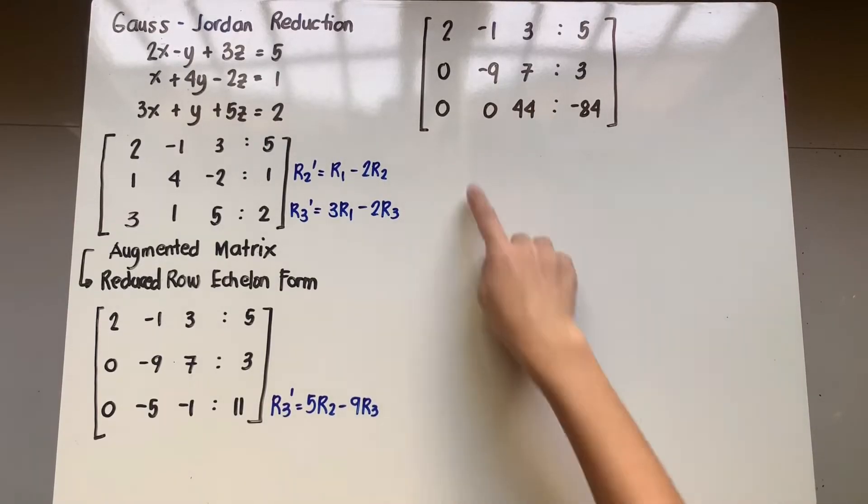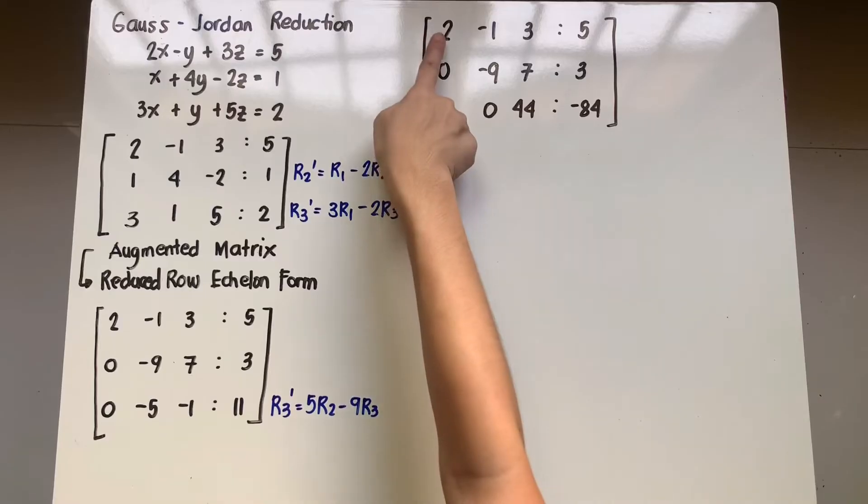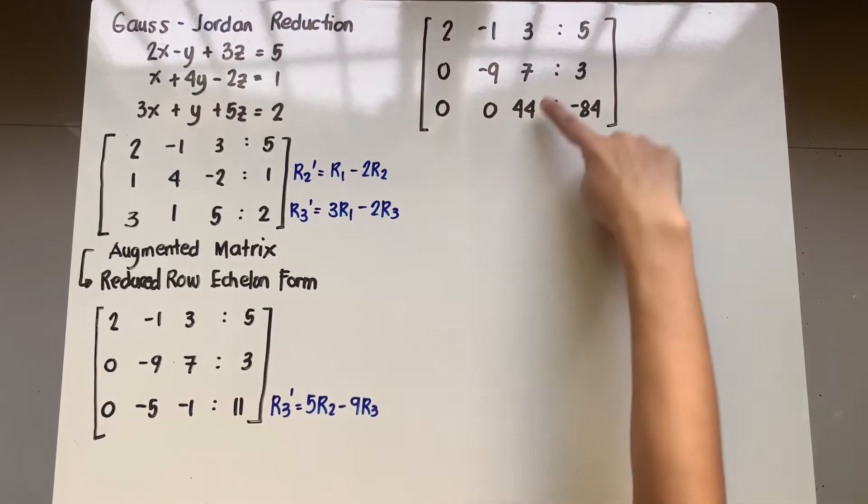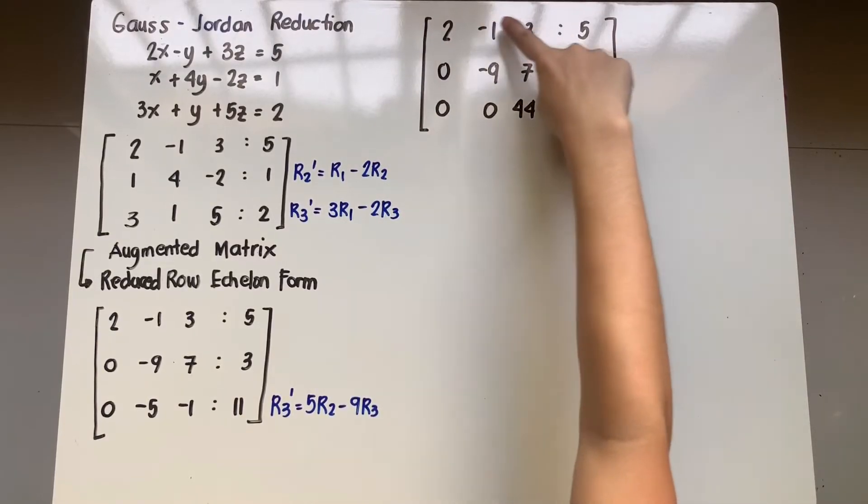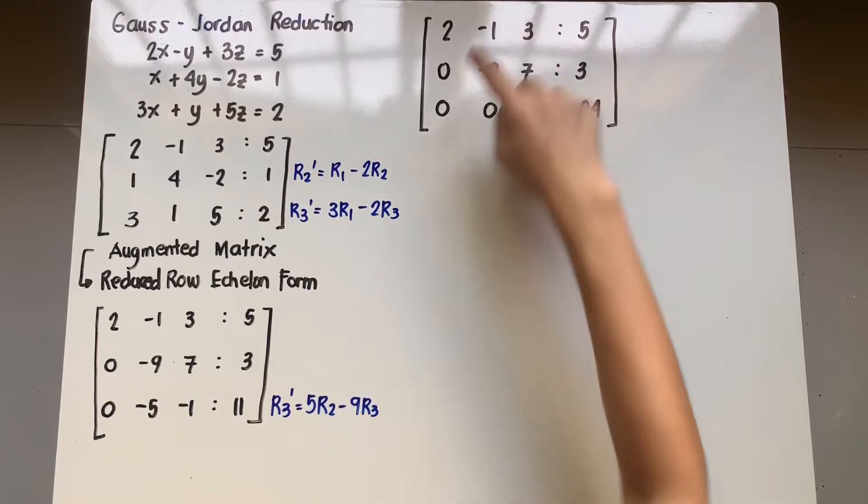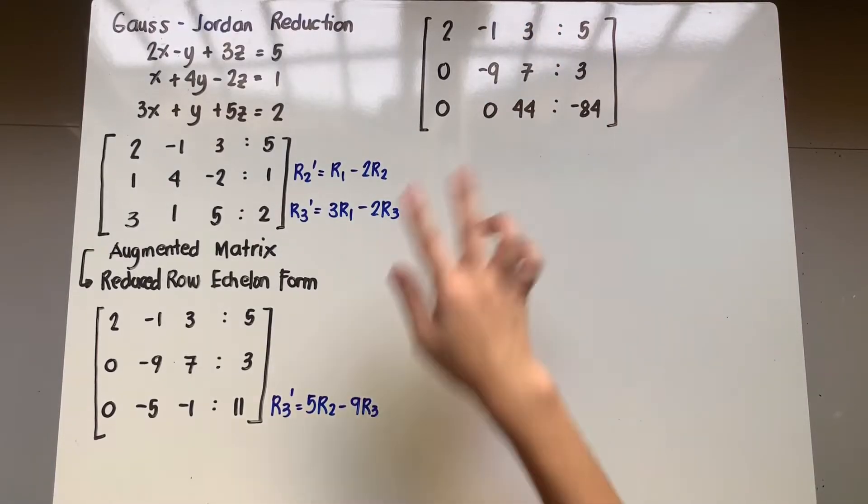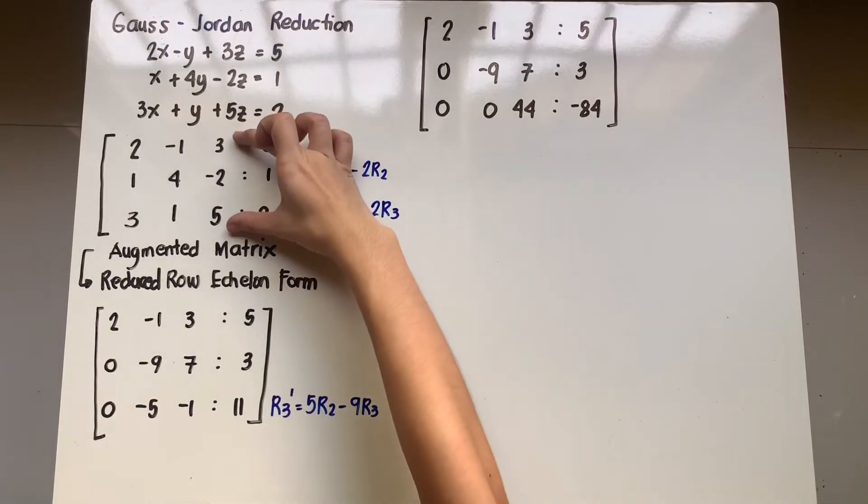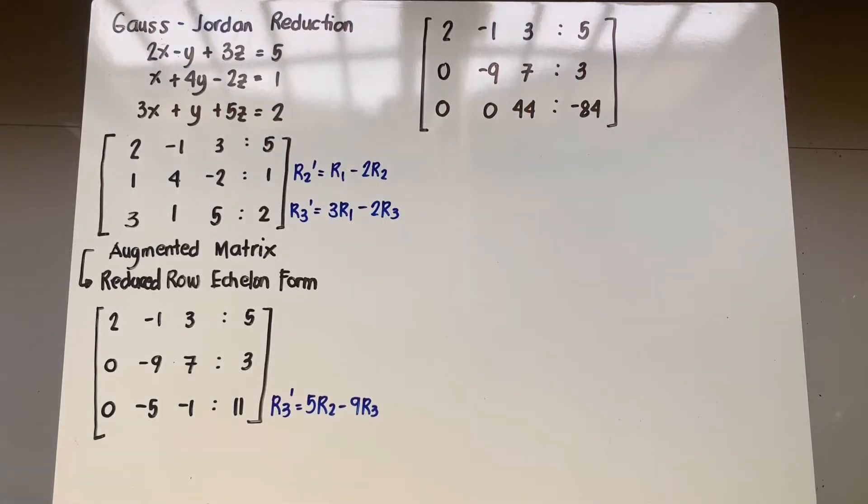In short, ang mangyayari dito is, the main diagonal will be 1, 1, 1, and the elements or the entries above the main diagonal will be 0 also. And that will look as if it's an identity matrix. So in short, our target will be from this augmented matrix to transform it papuntang identity.